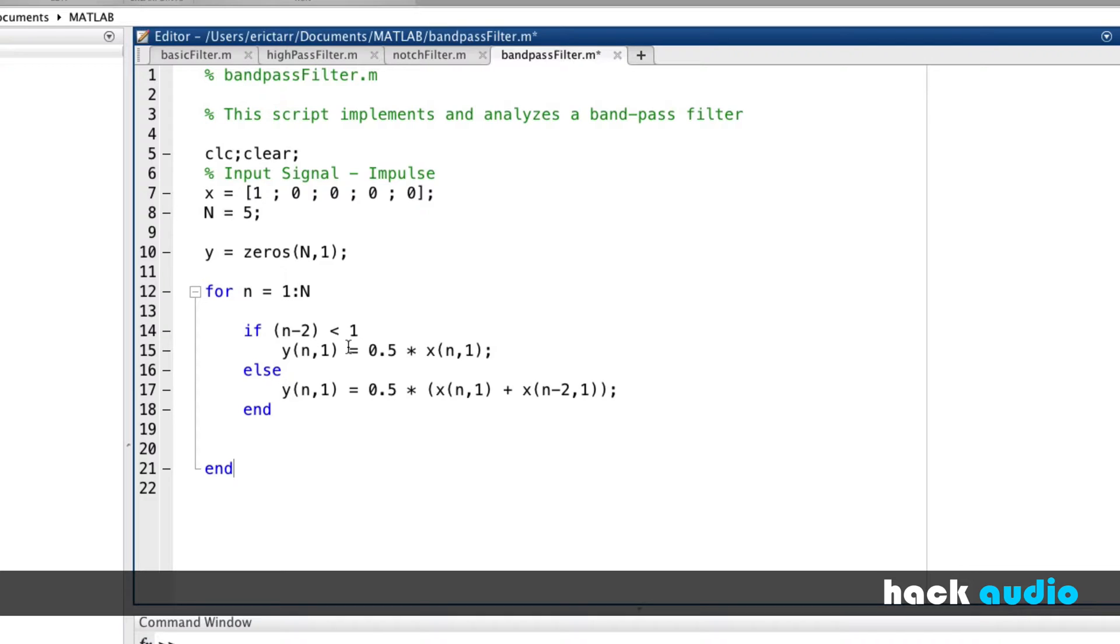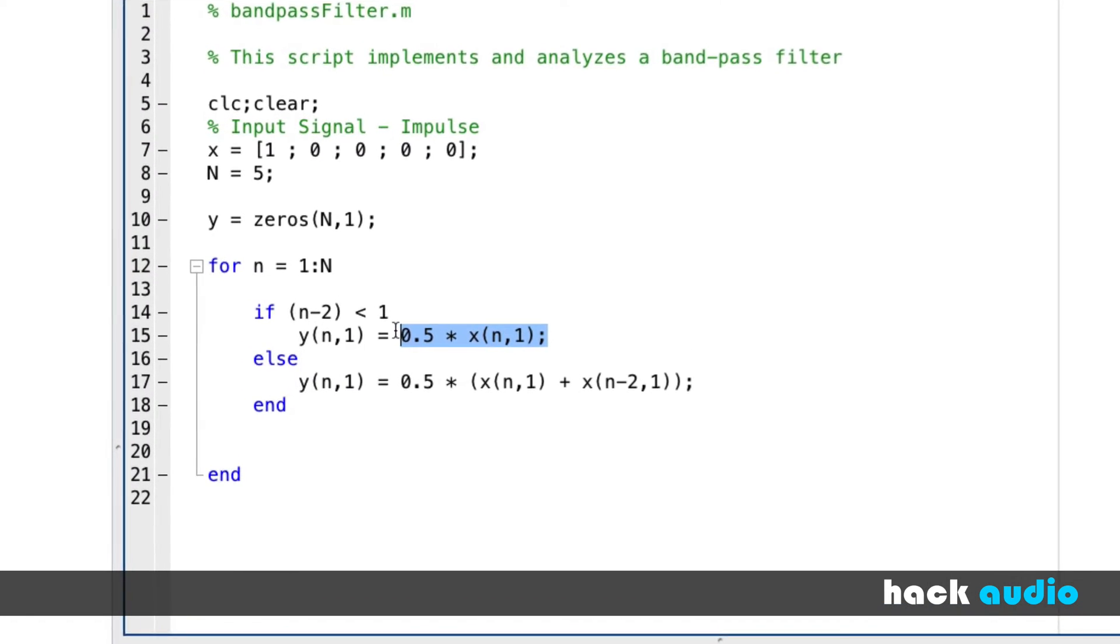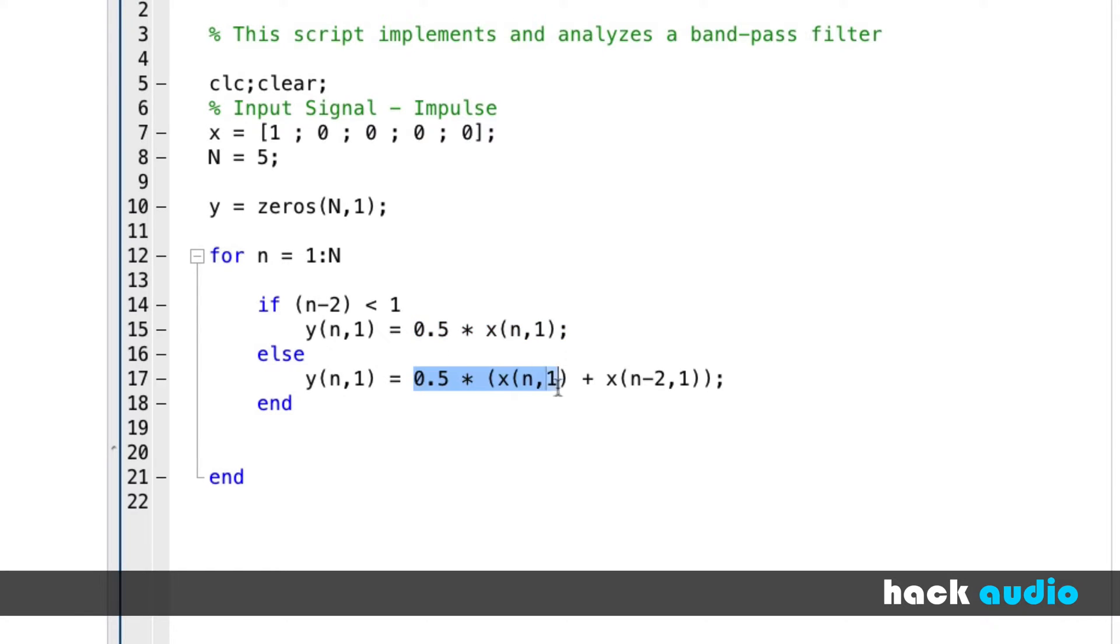Initially, when we don't have an acceptable element here in our array, we're just going to use the dry path. And then what happens is we're going to switch over and use two samples of delay blended in here. The only difference is we're going to use a gain of minus one. So we'll add in this minus one times two samples of delay.